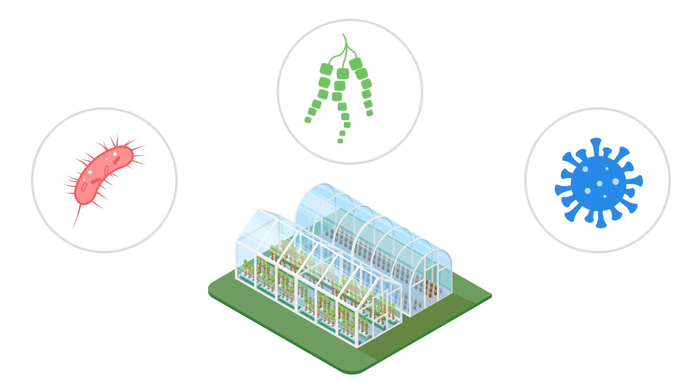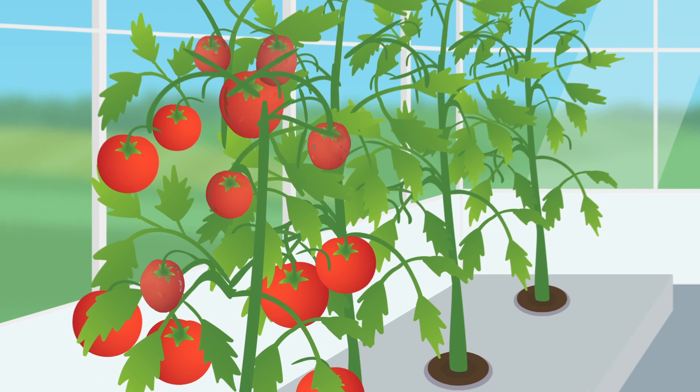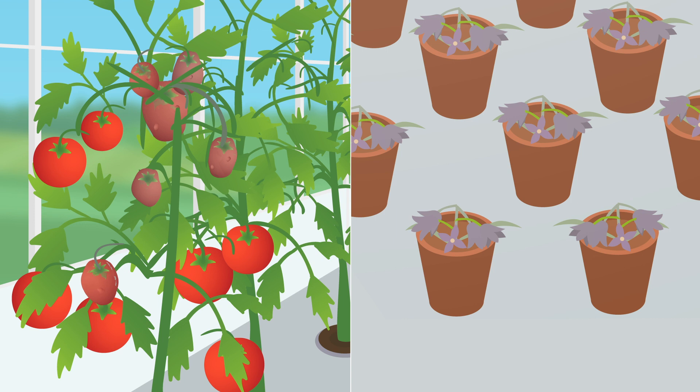Bacteria, fungi and viruses are a great risk to the crop. An infection usually originates elsewhere and creeps in via people, materials, the water or propagation material.